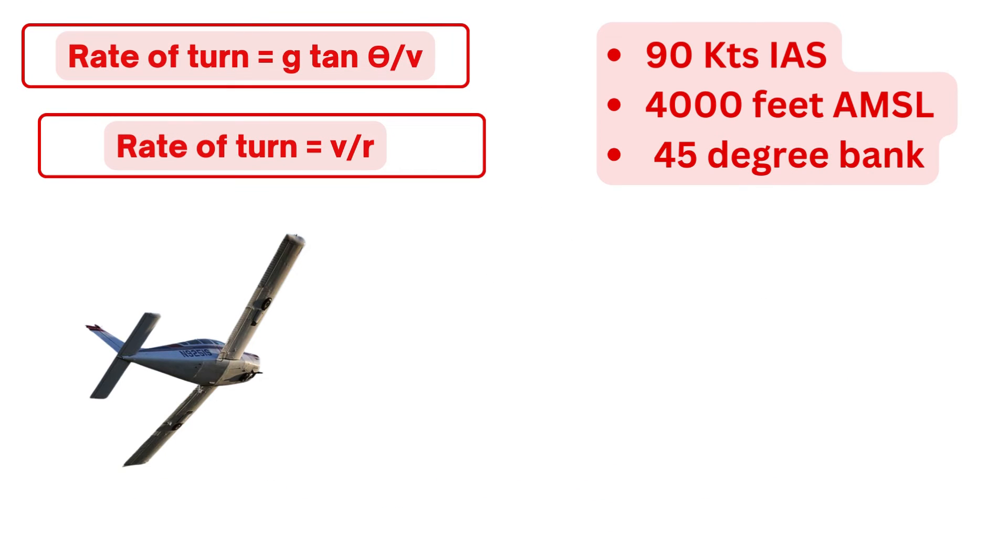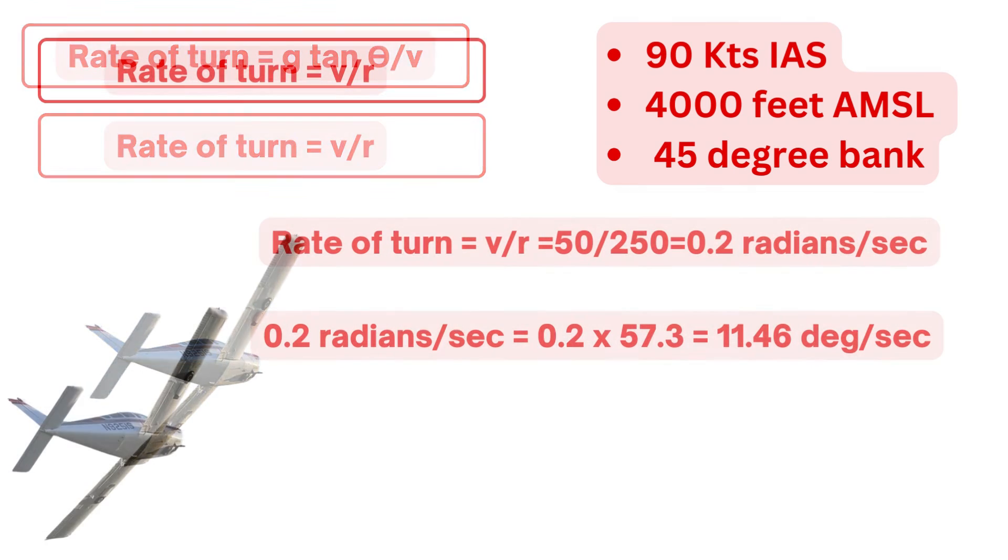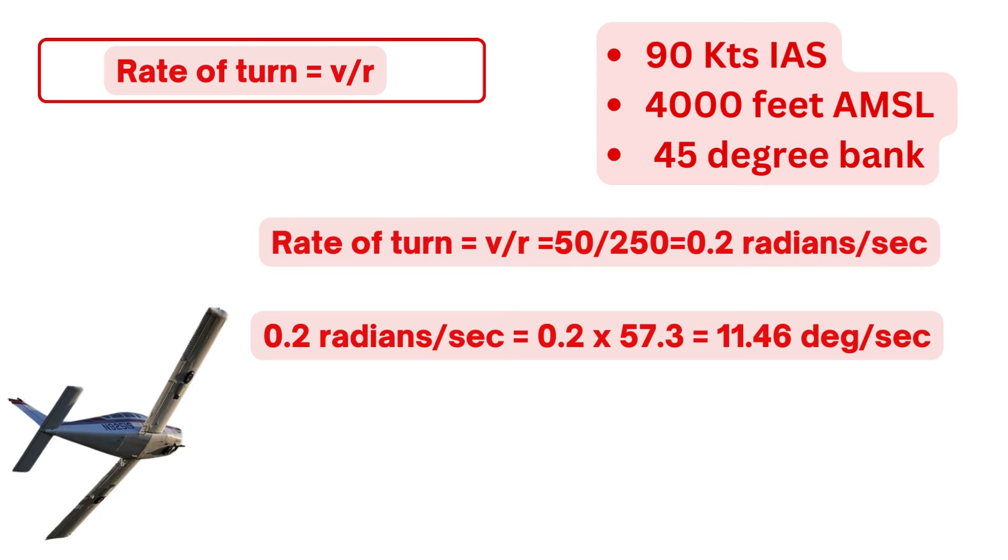Now to calculate rate of turn, we can use either of the formula either v upon r or g tan theta upon v. Let's use v by r. So using this formula for the given condition, the answer comes out to be 0.2 radians per second. And if we multiply this with 57.3, we get the answer of 11.46 degree per second. So at 90 knots of indicated speed at 4,000 feet above mean sea level with bank angle of 45 degree, you would be turning with a rate of 11.46 degree per second.